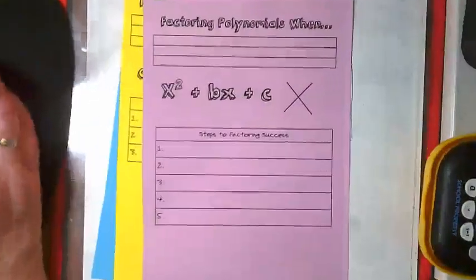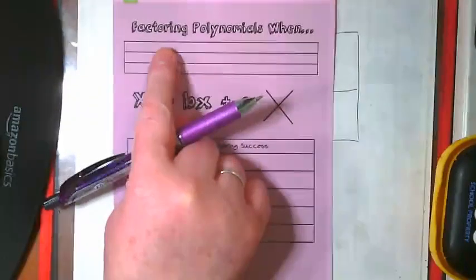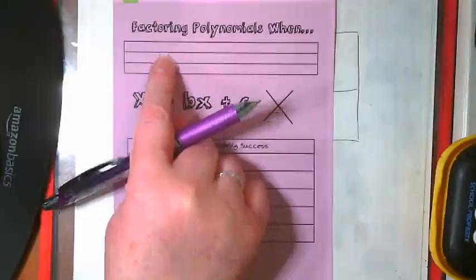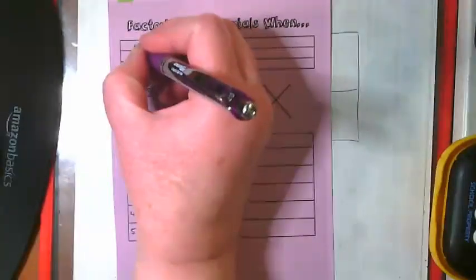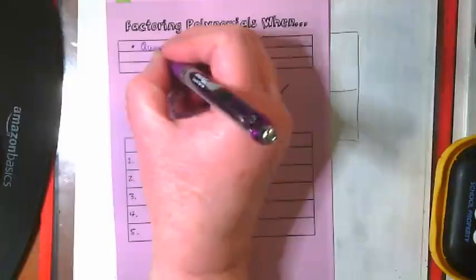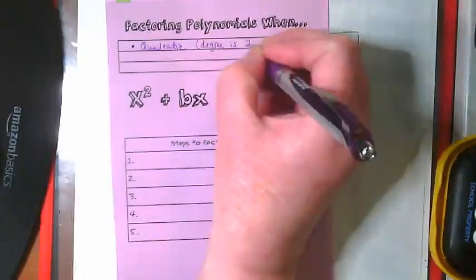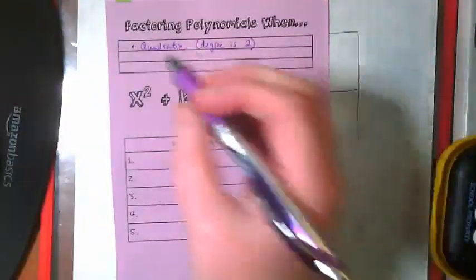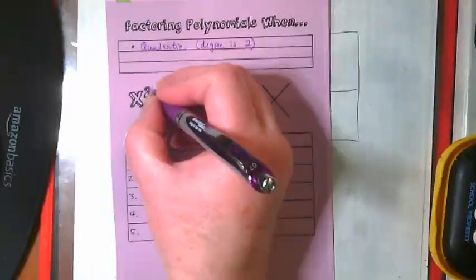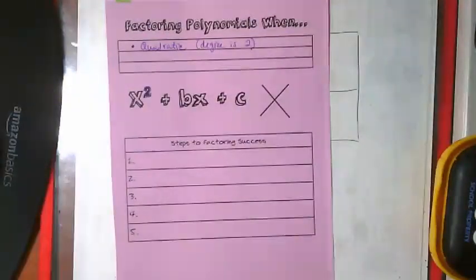So we are gonna start off like I said with this purple one and we're talking about factoring polynomials when there's three criteria that make this set of steps work. The first criteria is when we're dealing with a quadratic, so the degree is 2, and in our example you can see that this is a quadratic because it has an x squared in that first term.